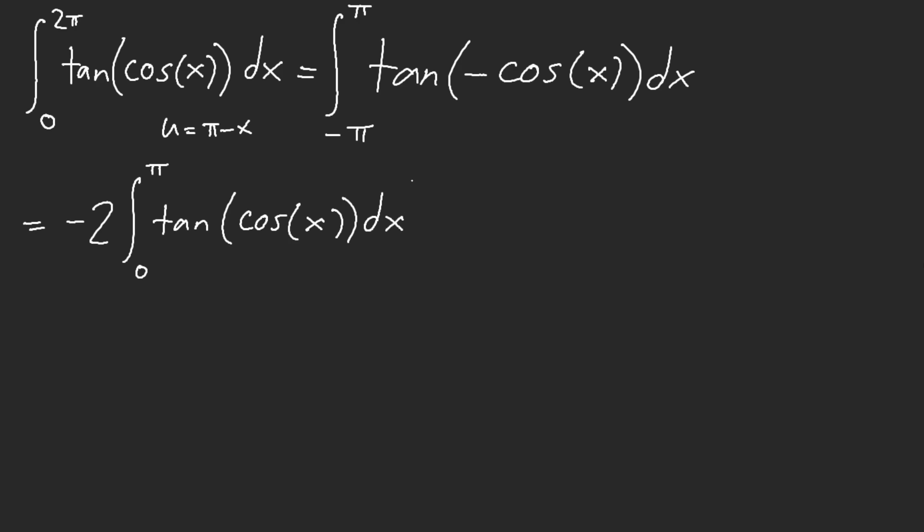So what we can do is we can keep going. Now we can let u equal pi over 2 minus x. Why do I want to do this is because I want to turn this into sine, and then maybe there's some cancellation with symmetry, because sine's an odd function.